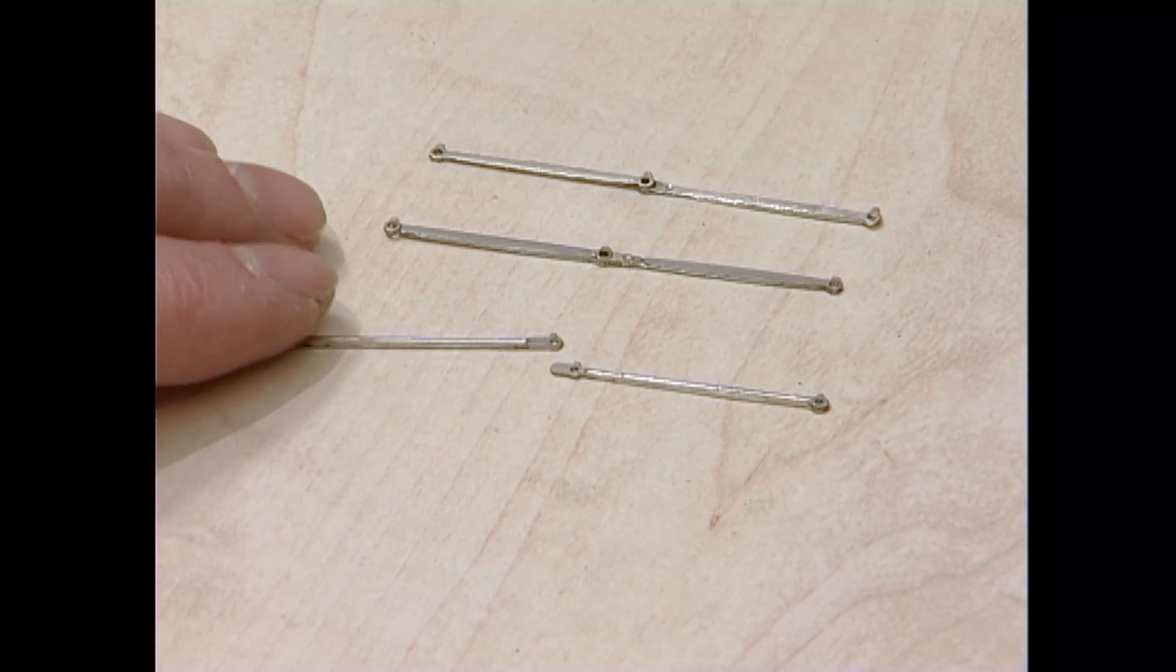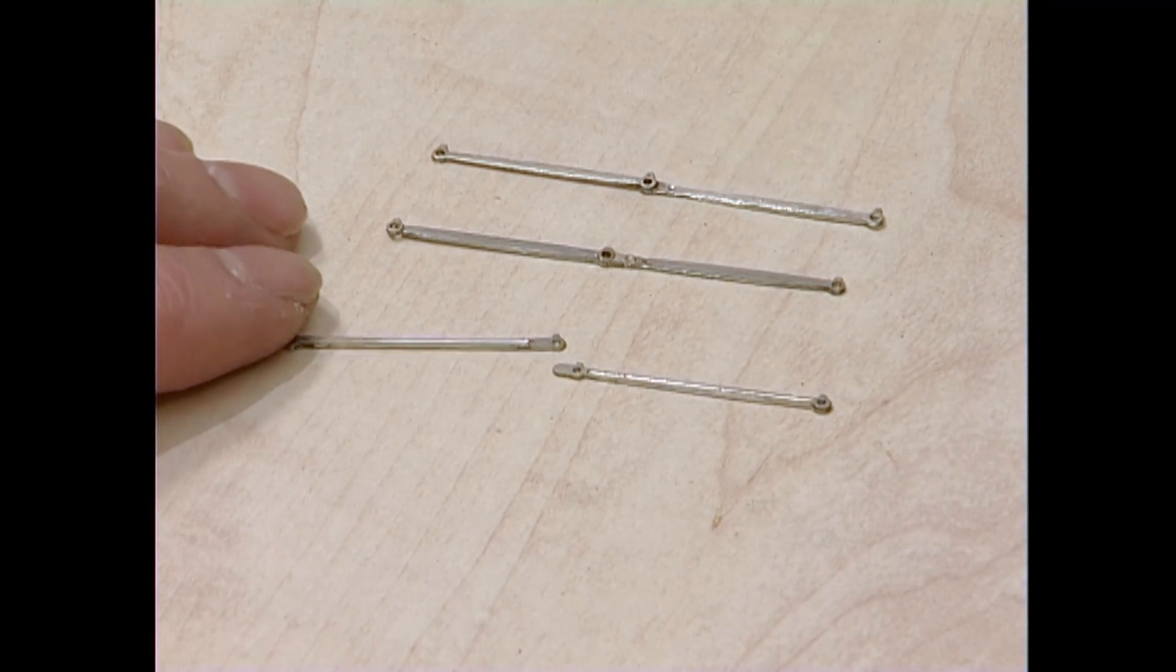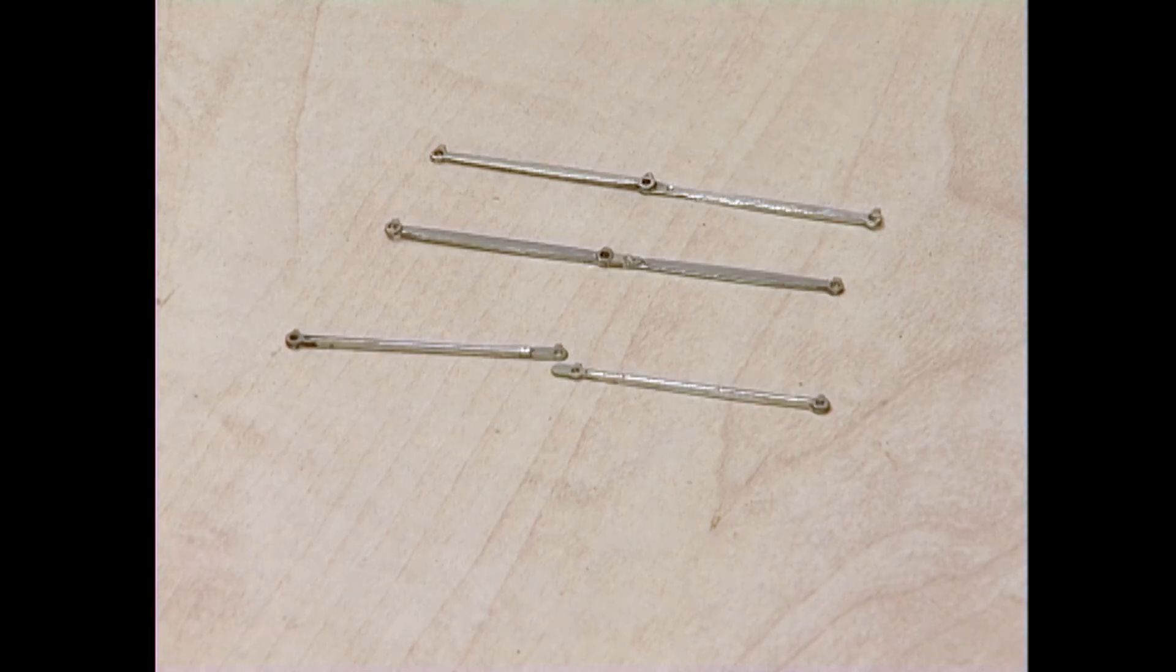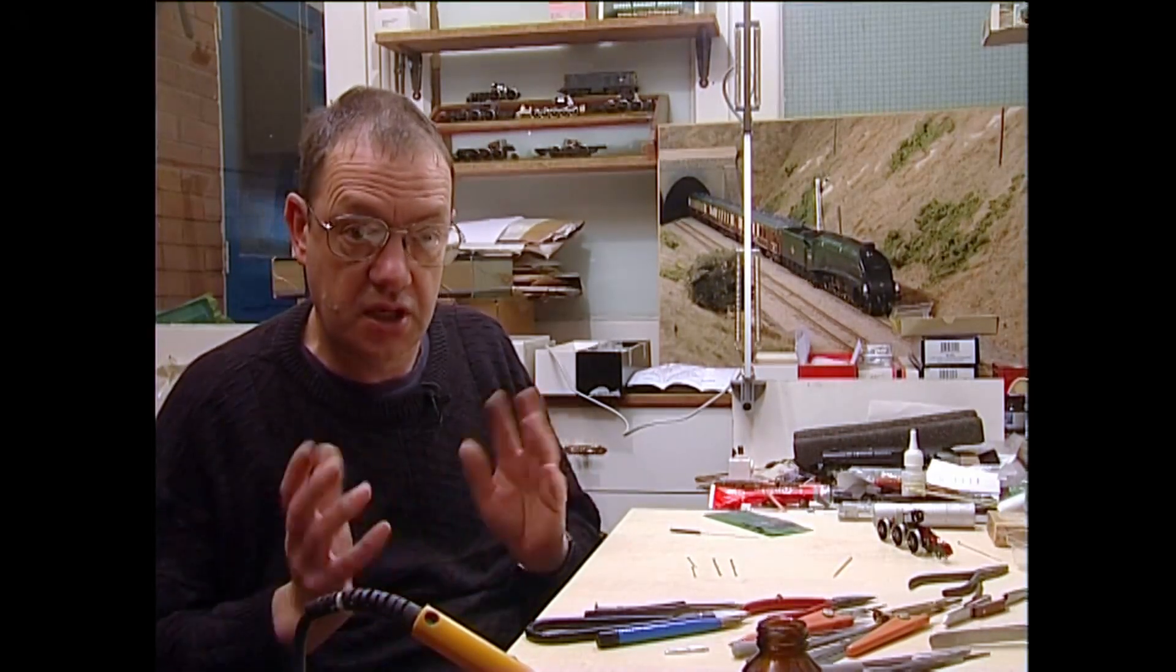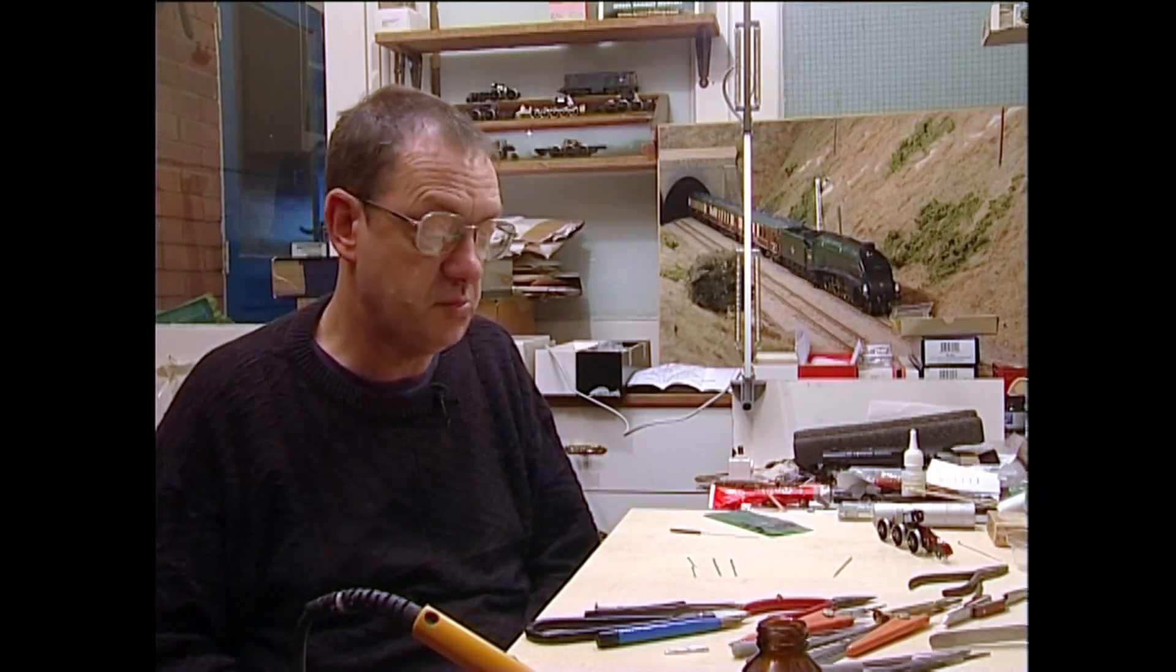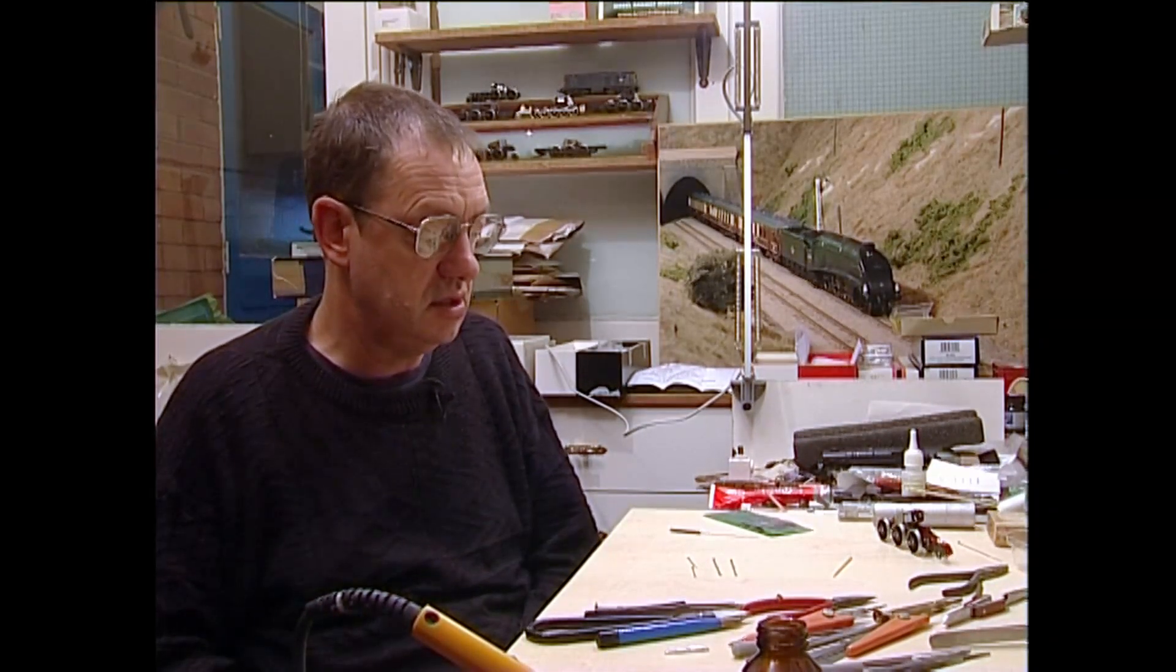The Allen-Gibson coupling rods are articulated because Allen actually does allow on his chassis for compensation or springing. I personally don't think it's necessary, but then I'm modelling basically in double O gauge. Perhaps in the finer gauges it is necessary.